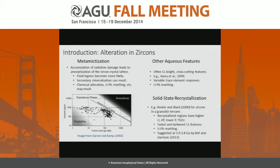There are also a variety of processes seen in various zircon populations around the planet. Metamictization — accumulation of radiation damage over time — can lead to amorphization of the zircon crystal lattice, making fluid ingress much more likely, along with secondary mineralization and chemical alteration. If the zircon is later reheated, some of that radiation damage can anneal, potentially resetting the uranium-lead clock fully or partially and altering chemical contents.